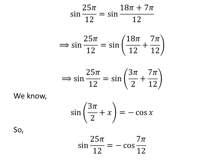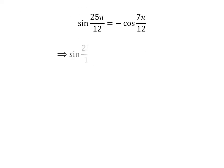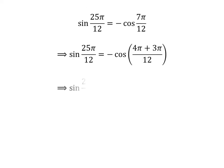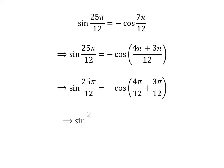Applying the above identity gives us: sine of 25 times pi upon 12 is equal to minus cosine of 7 times pi upon 12, which equals minus cosine of pi upon 3 plus pi upon 4.